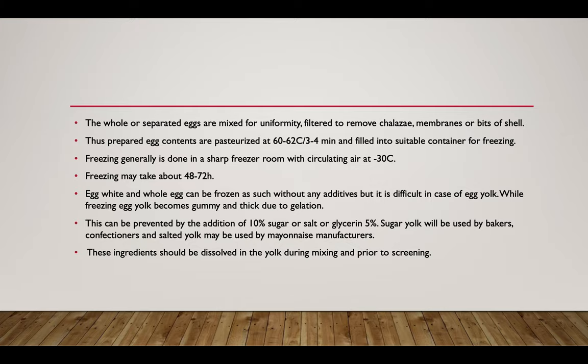The prepared egg contents are pasteurized at 60 to 62 degrees centigrade for 3 to 4 minutes, then filled into a suitable container for freezing. Freezing is done by sharp freezer with air circulating at minus 30 degrees centigrade and usually takes 48 to 72 hours. Egg white and whole egg can be frozen without any additives, but egg yolk is difficult — during freezing it becomes gummy and thick due to gelation. This can be prevented by addition of 10 percent sugar or salt, or glycerin at about 5 percent. Sugared yolk will be used by bakers and confectioners; salted yolks can be used by mayonnaise manufacturers. These ingredients should be dissolved in yolk during mixing prior to screening.